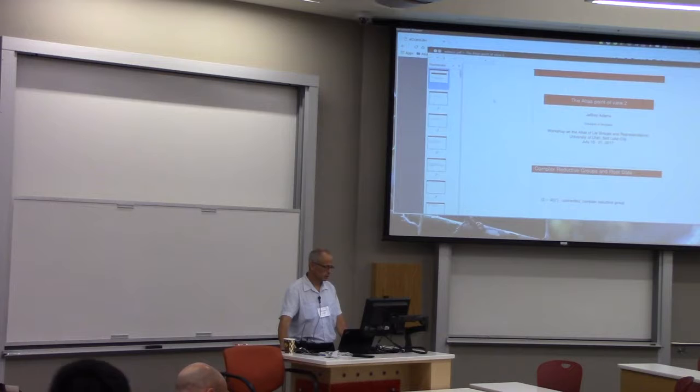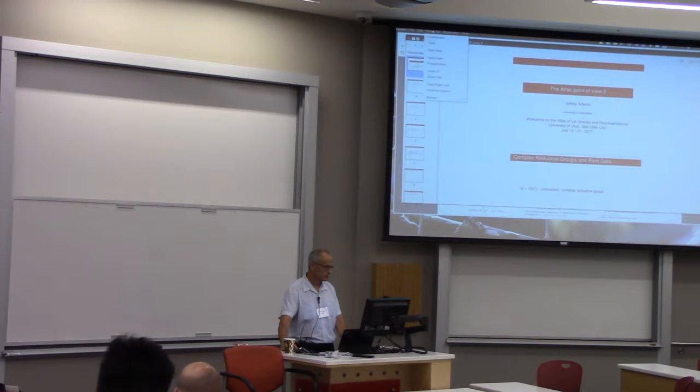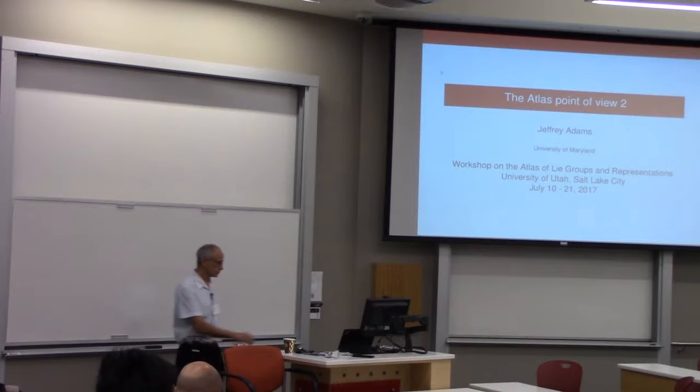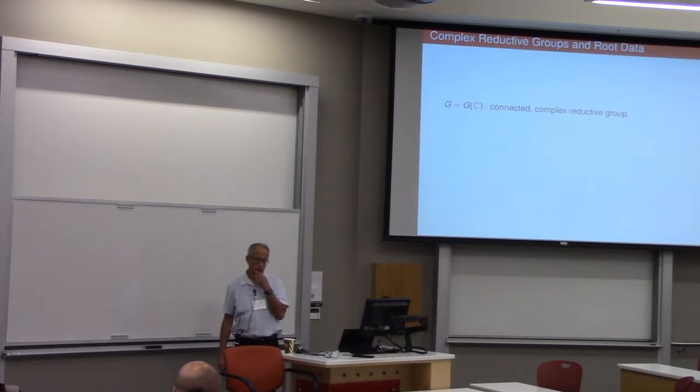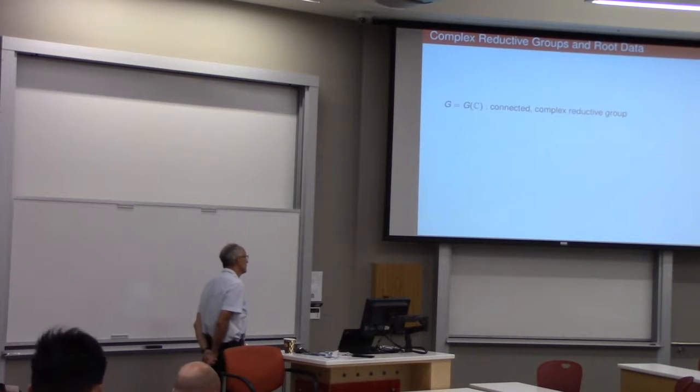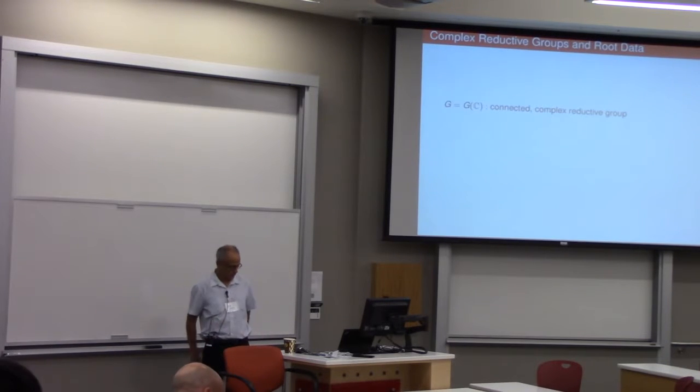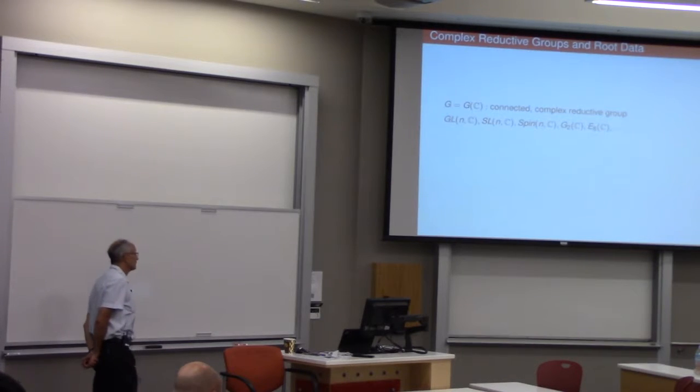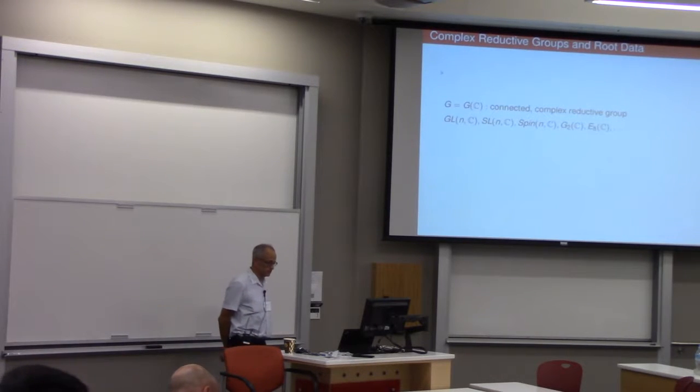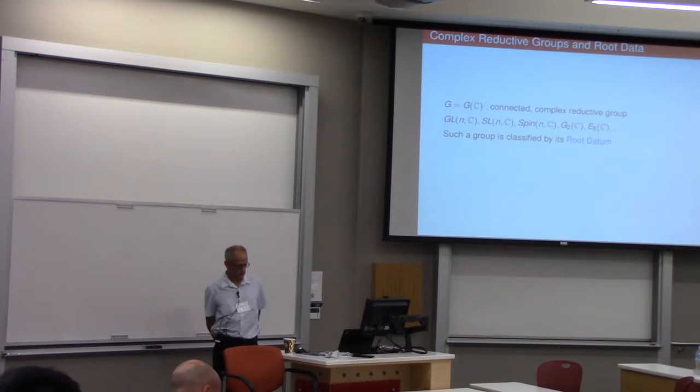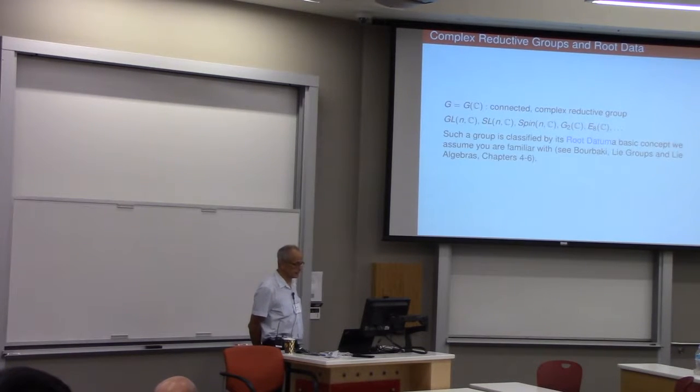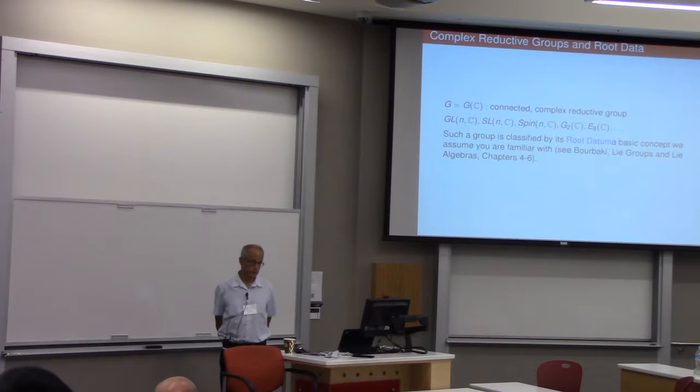Okay, so this is the second talk in my series, and I'm going to start off with a little bit more detail about root data. I talked about that in my computer lecture yesterday. It's largely for notation. So our starting point is a connected complex reductive group. There are a couple of examples there to refresh your memory. And there's a beautiful theory that a reductive group is classified by its root datum.